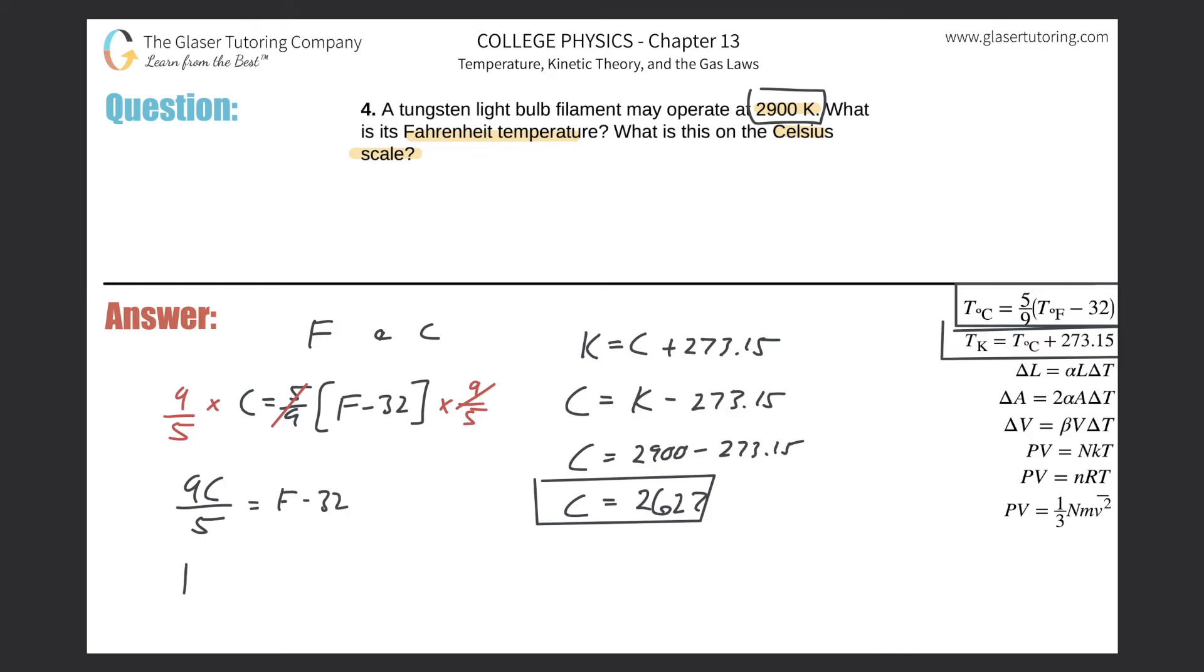And then to solve for F, just add the 32 over to the left-hand side. So there's going to be 9C over 5 plus 32. That's great. So now what I can do is take my value here and plug it in for C.